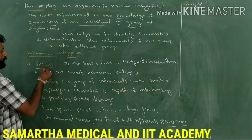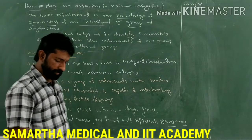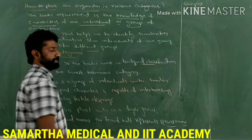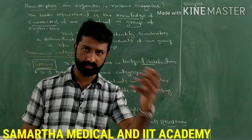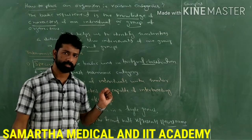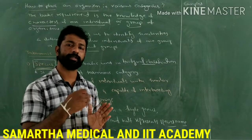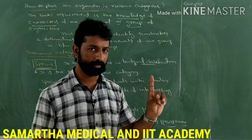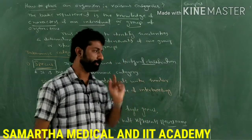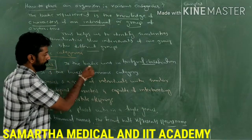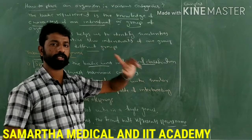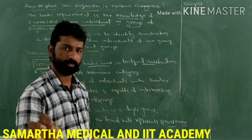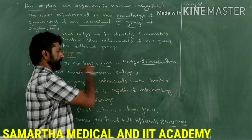The first category in the taxonomical hierarchy is species. Species is the basic unit of biological classification. In the previous class, we discussed that a taxon, or category, or rank is a unit of taxonomical arrangement — but here, species is considered the basic unit of biological classification. Don't get confused: a unit of taxonomical arrangement means a category, rank, or taxon, but the basic unit of biological classification is species. Species is also the lowest taxonomic category.